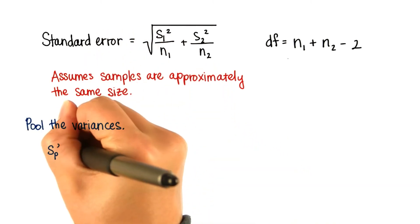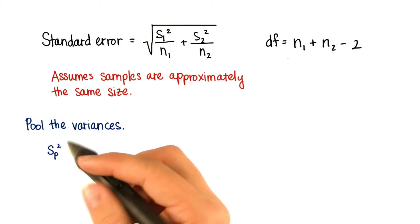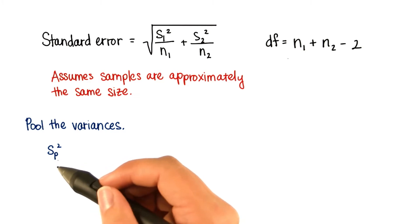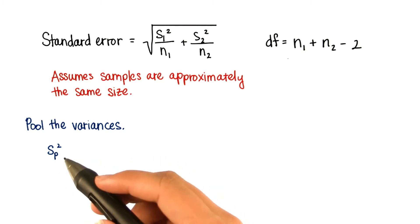The pooled variance, which will denote s sub p squared, because remember that s squared was the variance and s was the standard deviation, is the average of the two sample variances that corrects for different sample sizes.